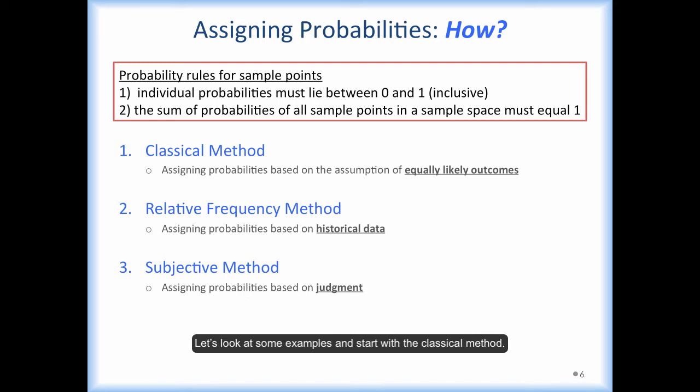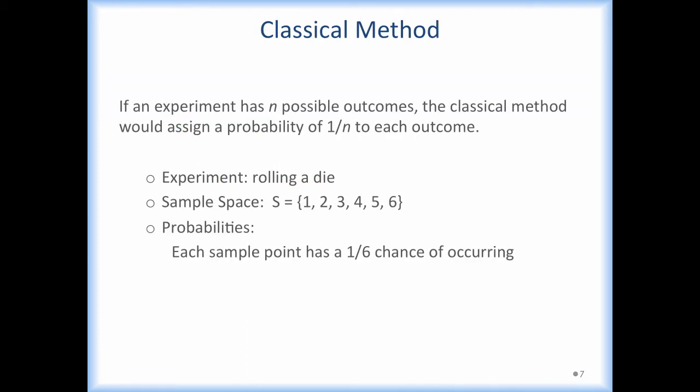Let's look at some examples and start with the classical method. If the experiment is rolling a 6-sided die, then the sample space contains 1, 2, 3, 4, 5, and 6. If we assume this is a fair die and each outcome is equally likely, then we will assign 1 over 6 of chance to each sample point.